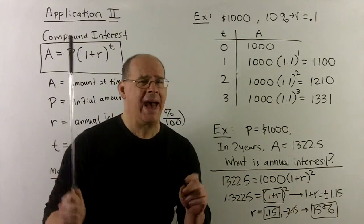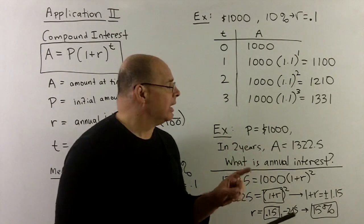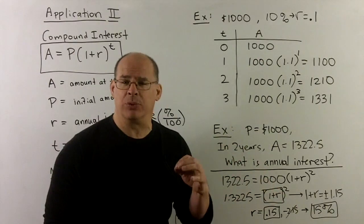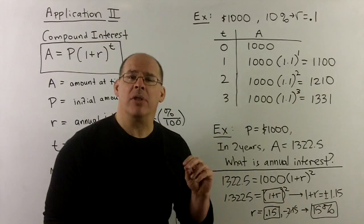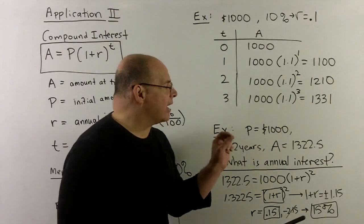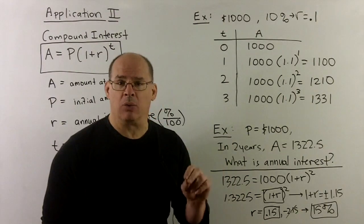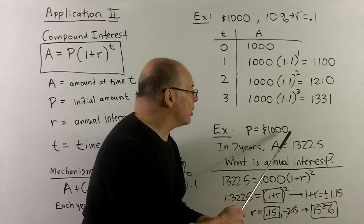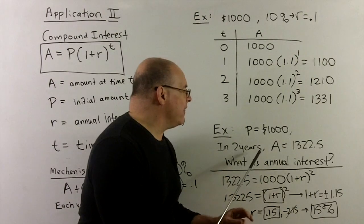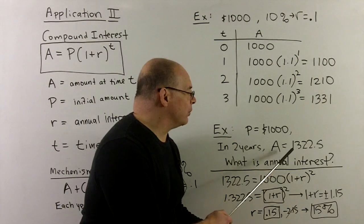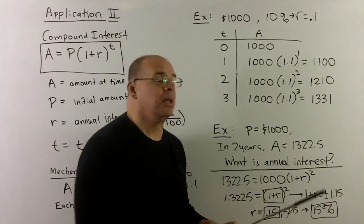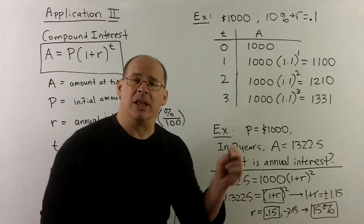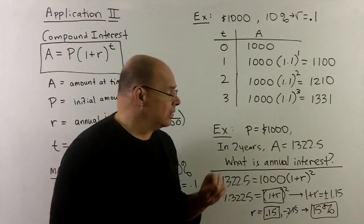Now, we have a formula with four variables. If I have three variables as numbers, I'd like to be able to solve for the fourth one. We don't have all the technique for that yet, but we can work out an example for the square root property. So let's try this. Suppose our initial amount's $1,000. We'll wait two years, and then we'll have an amount of $1,322.50. That's three of our variables. The one that's missing is the annual interest rate. So let's try to solve for that.